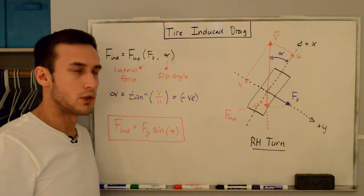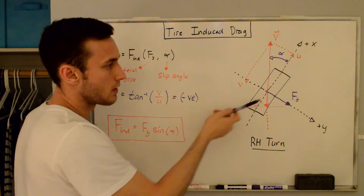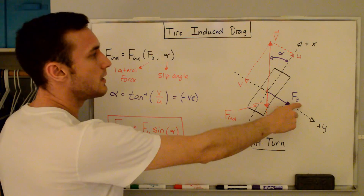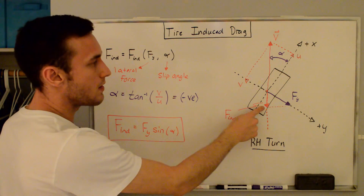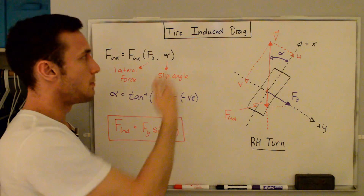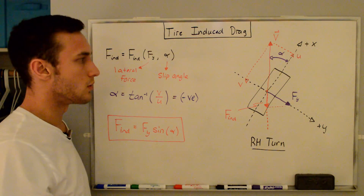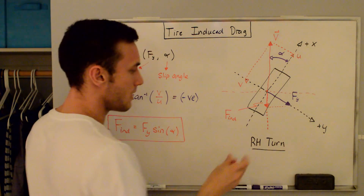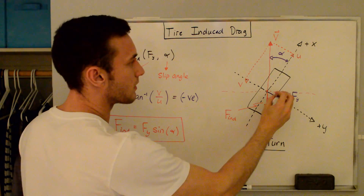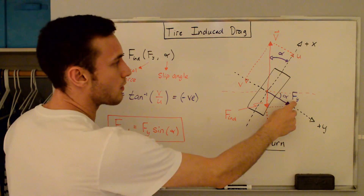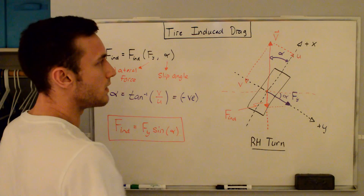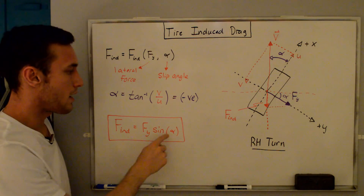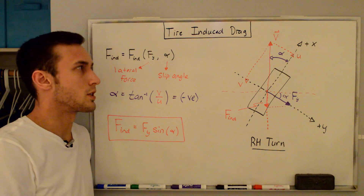Based on this slip angle, a lateral force is produced. In a right-hand turn, the lateral force is produced in the positive y-direction in the tire axis system — so we have a positive lateral force. What we're trying to find is the induced drag, which is the component of the lateral force in the velocity vector direction. You can see it's pointing opposite to where the tire is going, which makes sense — it's an induced drag, opposing the motion. To find this value, we take the lateral force and multiply by the sine of the slip angle alpha, giving us the component in that direction. So: induced drag = lateral force × sin(α).